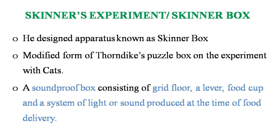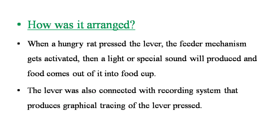Now let us look into the experiment by Skinner, also called the Skinner box. B.F. Skinner conducted a series of experiments with animals like rats and pigeons. The Skinner box was a specially designed apparatus — a modified form of the puzzle box used by Thorndike in his experiments with cats. The Skinner box was a soundproof box consisting of a grid floor, a lever, a food cup, and a system of light or sound produced at the time of delivering food into the food cup.